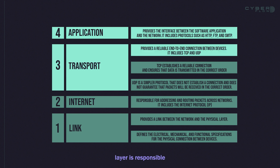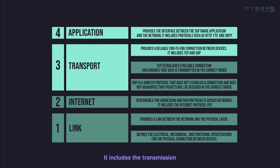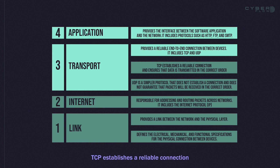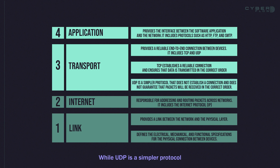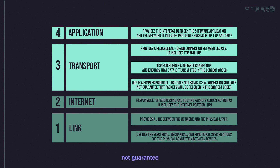The transport layer is responsible for providing a reliable end-to-end connection between devices. It includes the Transmission Control Protocol (TCP) and the User Datagram Protocol (UDP). TCP establishes a reliable connection and ensures that data is transmitted in the correct order, while UDP is a simpler protocol that does not establish a connection and does not guarantee that packets will be received in the correct order.